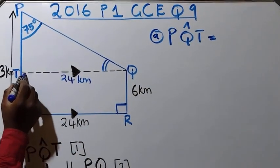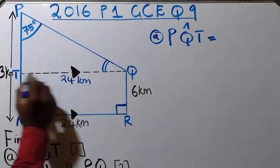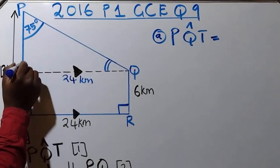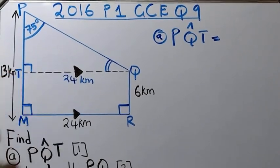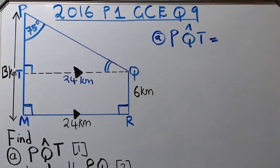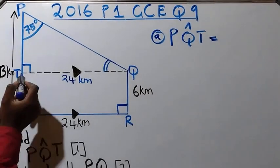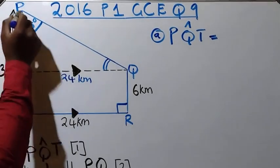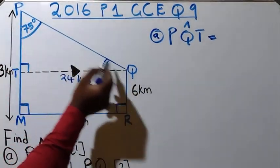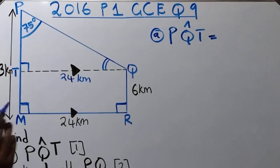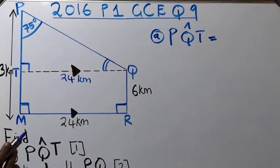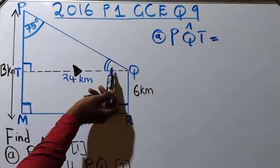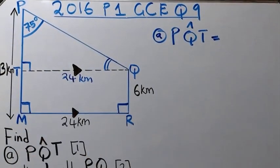This line cuts TQ, giving 90 degrees here and also 90 degrees on the other side. If you consider just the triangle PTQ, you can see it's a right-angle triangle. The sum of angles in a triangle is 180 degrees, so 75 plus 90 plus the angle at Q should equal 180.